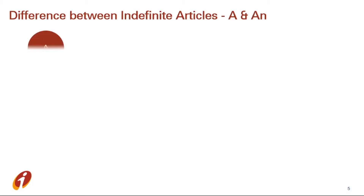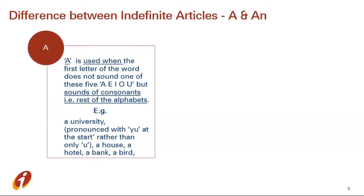Now let's see the differences between 'a' and 'an'. 'A' is used when the first letter of the word does not sound like one of the five vowels — A, E, I, O, U — but sounds like a consonant, that is the rest of the alphabets, for example B, D, F, and so on. For example: 'a university' — here the word starts with a vowel but sounds like 'yuh', that's why we use 'a university'. Same way: a house, a bird, a bank, and so on.